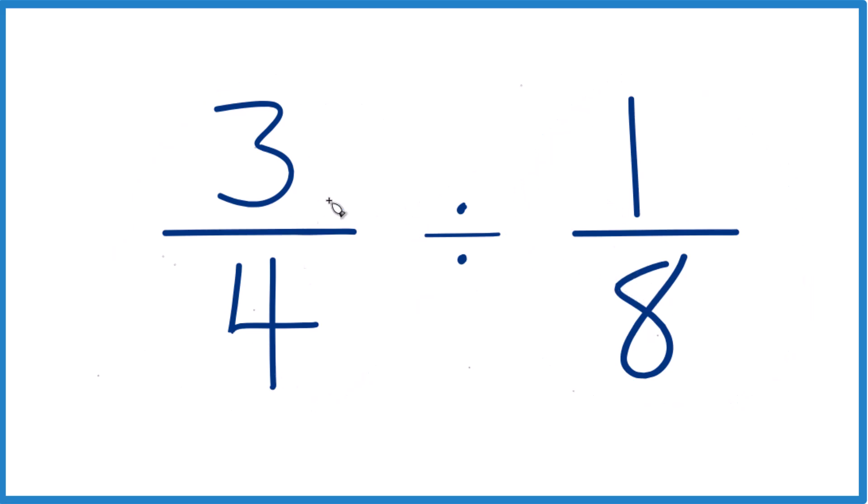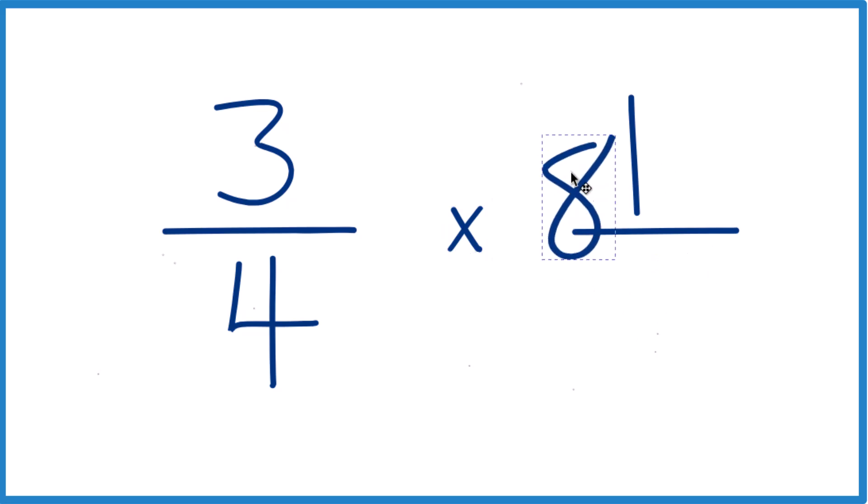So when we're dividing fractions like 3 fourths here divided by 1 eighth, what we can do instead of division, we can actually do multiplication if we take the reciprocal of 1 eighth. So we move the denominator to the top, the numerator goes to the bottom, and that's the reciprocal for 1 eighth.